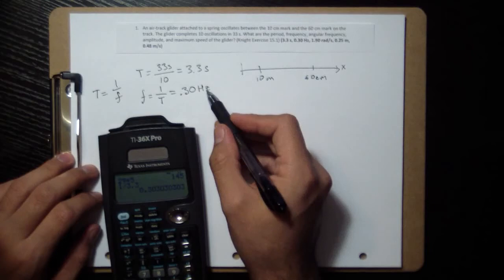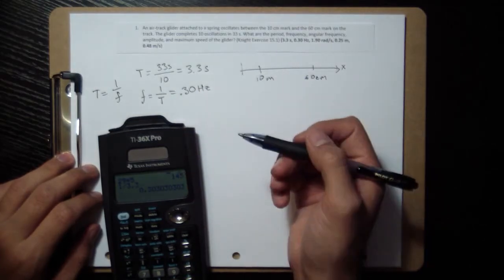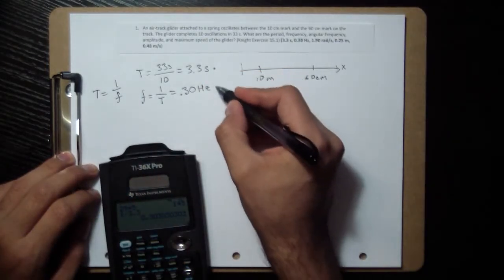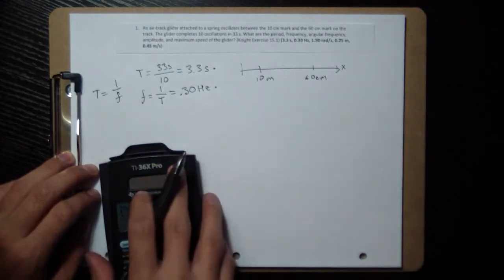And we have a name for the units for the frequency, which is hertz, which is cycles per second. So notice that the seconds are going to come into the denominator.